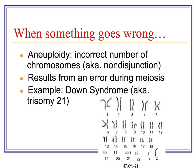Karyotypes can often reveal an incorrect number of chromosomes. This condition is known as aneuploidy, or nondisjunction. Nondisjunction is the process that produces the incorrect number of chromosomes, and it results from an error, usually during meiosis, in the formation of the egg or sperm cells.